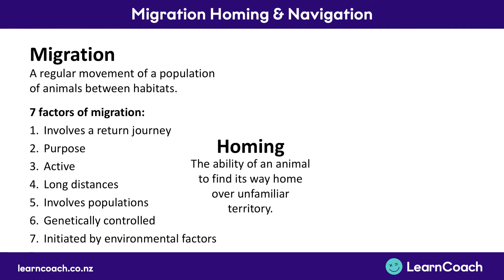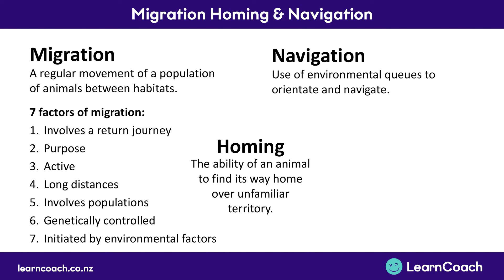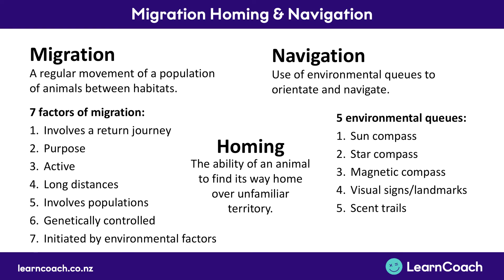Homing is the ability of an animal to find its way home over unfamiliar territory. There are many reasons an animal might get lost — storms, finding a mate, finding food — but either way you need the homing ability to get back home. Navigation is the use of environmental cues to orientate yourself. The five navigation tools are: sun and star compasses, magnetic crystals to use the Earth's magnetic field like a compass, visual signs and landmarks (which only work once you're familiar with the territory), and finally scent trails.